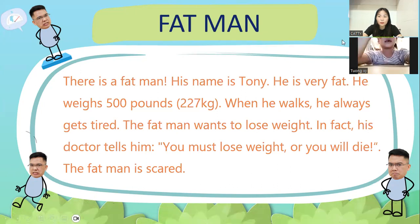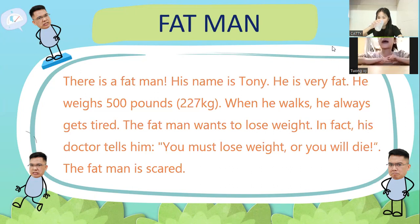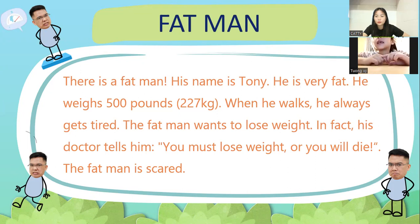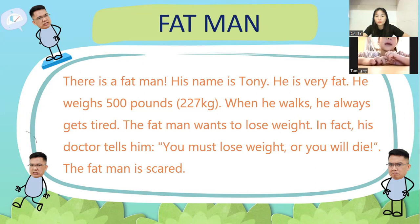Can I just read this one? Yes. Fat Man. There is a fat man. His name is Tung Vy. He is very fat. He weighs 500 pounds, 227 kilograms. When he walks, he always gets tired. The fat man wants to lose weight. In fact, his doctor tells him, you must lose weight or you will die. The fat man is scared.